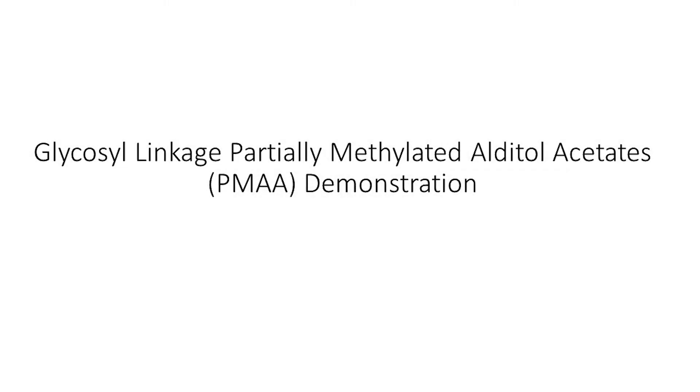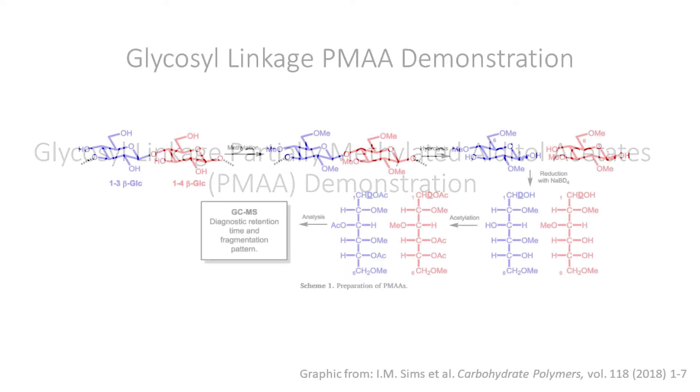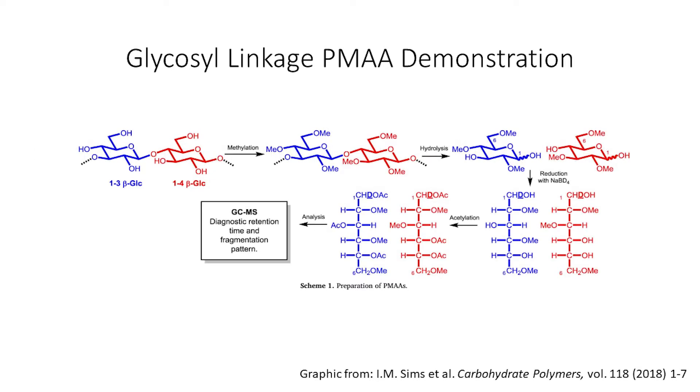Today we will be going through the procedure for glycosyl linkage analysis with partially methylated alditol acetates or PMAAs. This method allows us to break down oligosaccharides and polysaccharides into monosaccharides and determine how they were linked in their original structures.